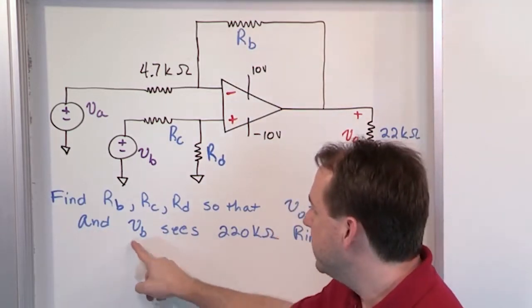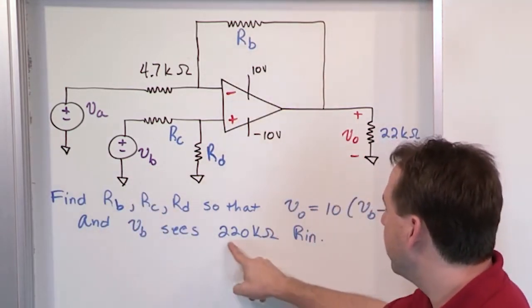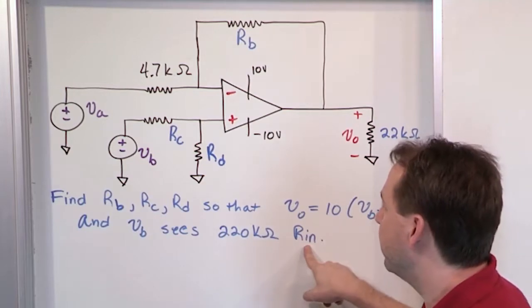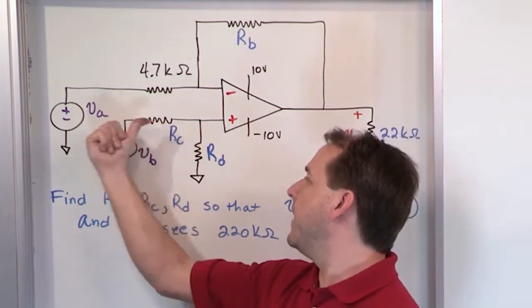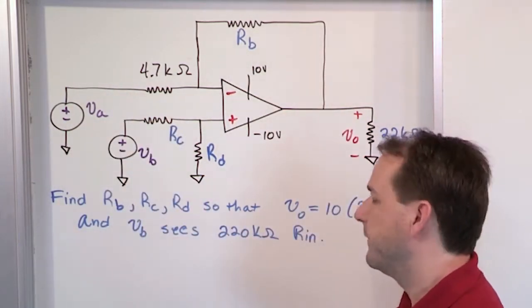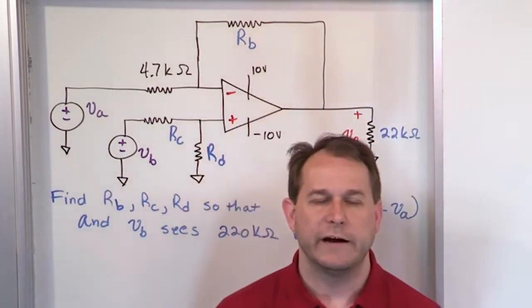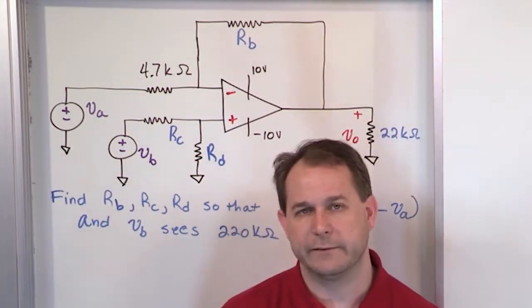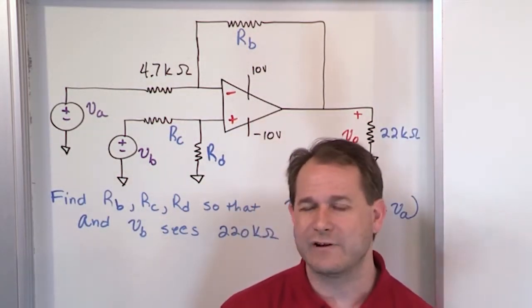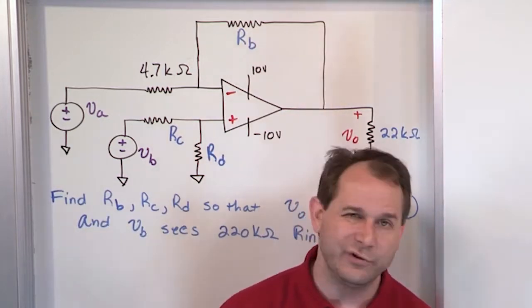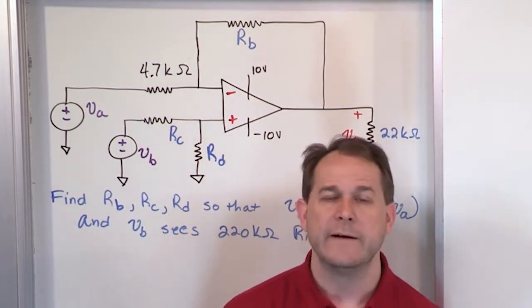And VB, which is this guy, sees 220 kilo ohms as the input resistance. When you put eyeballs this way, it sees 220 kilo ohms. So you have a couple of things going on here, and at first this problem looks really complicated because you have three unknown resistances. You're not asked to find one. You're not asked to find two. You're asked to find all three of them.